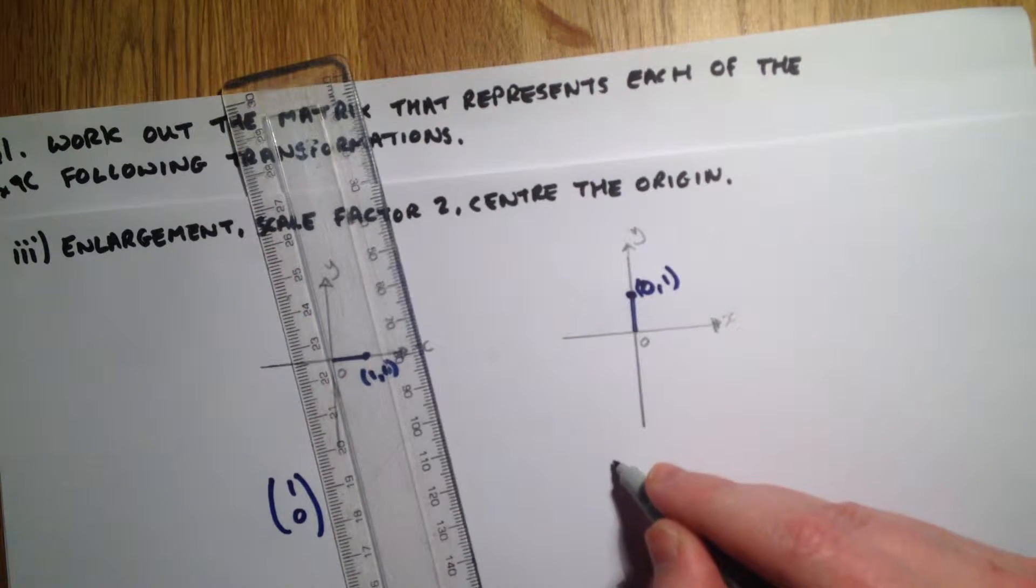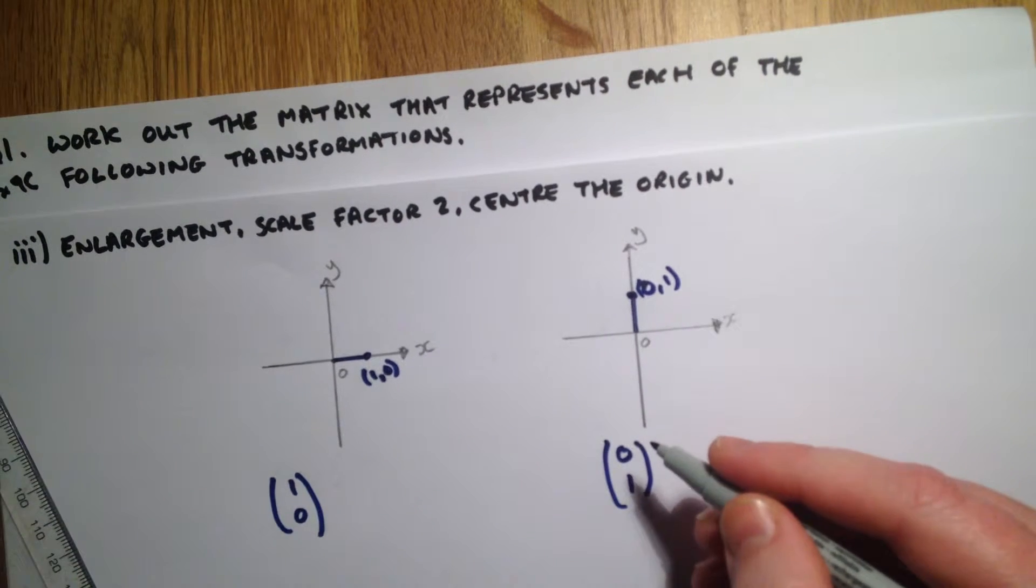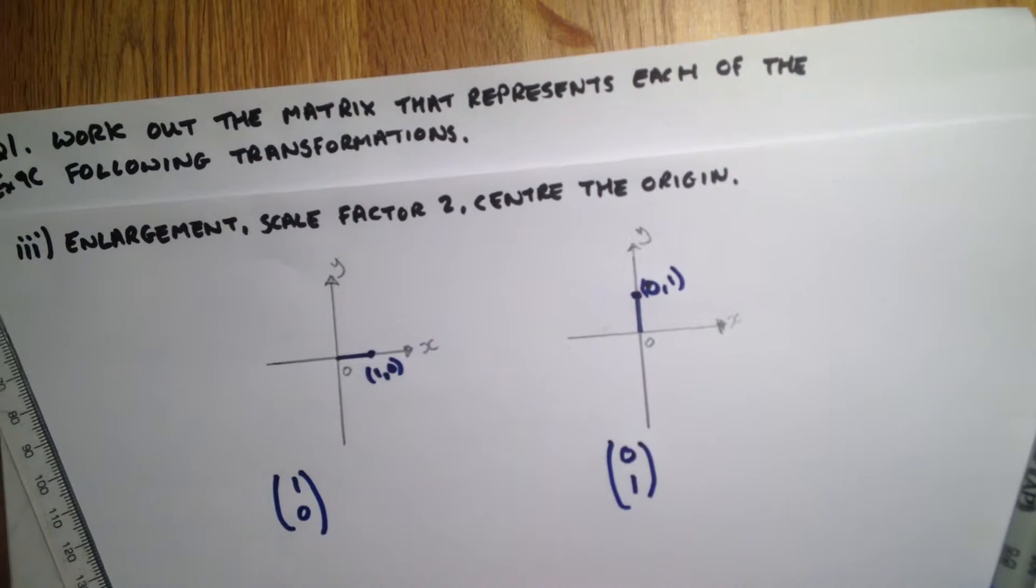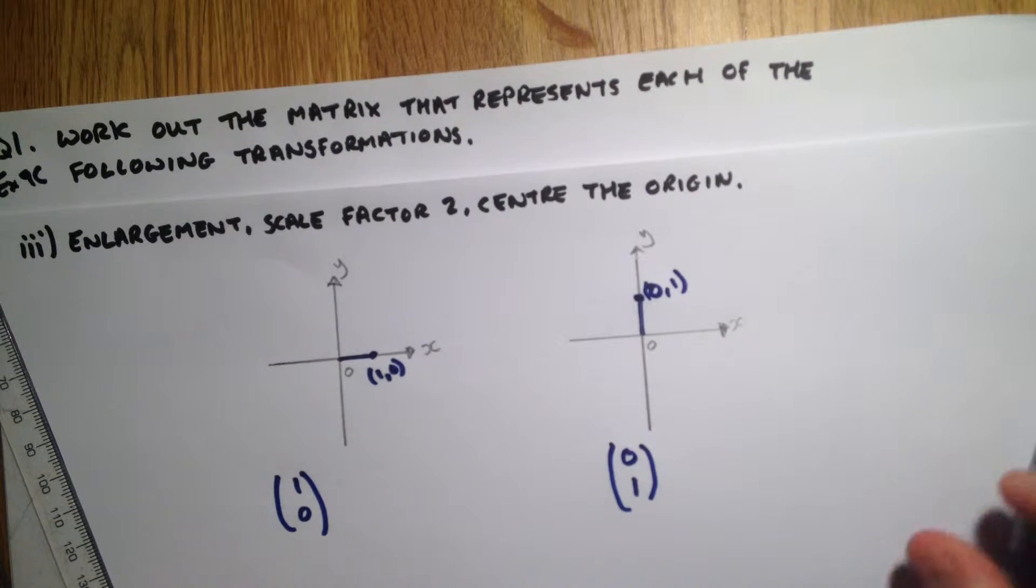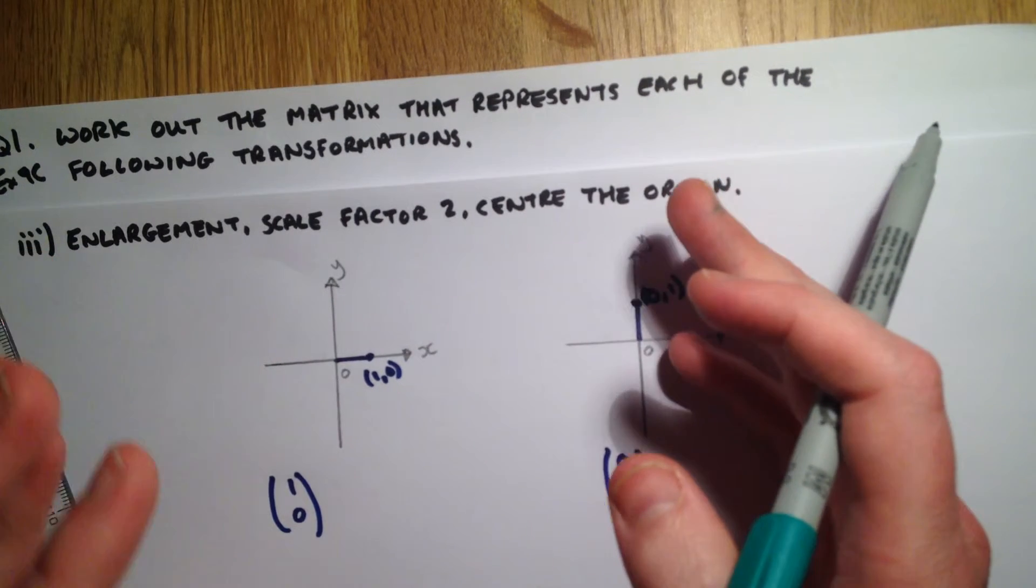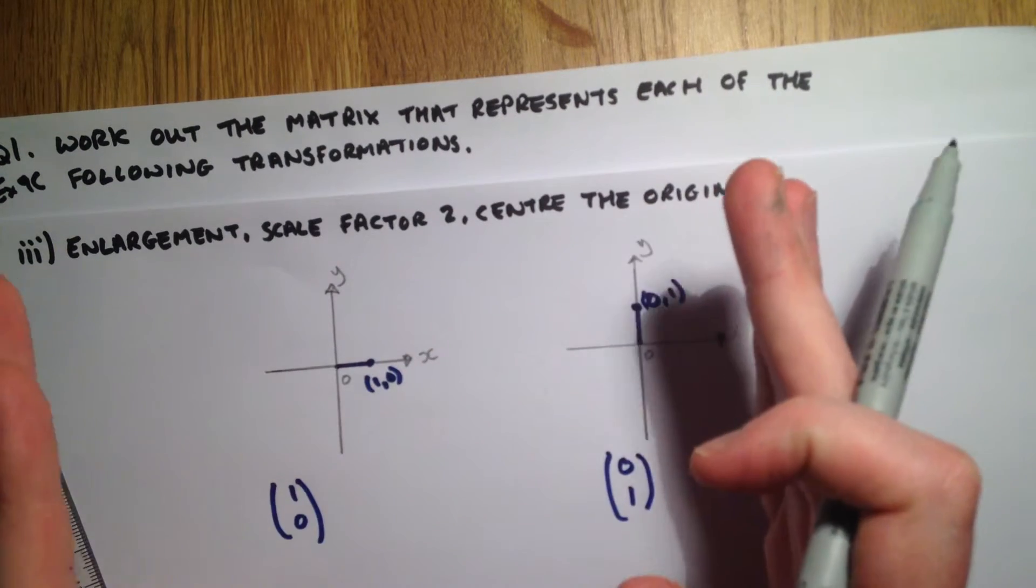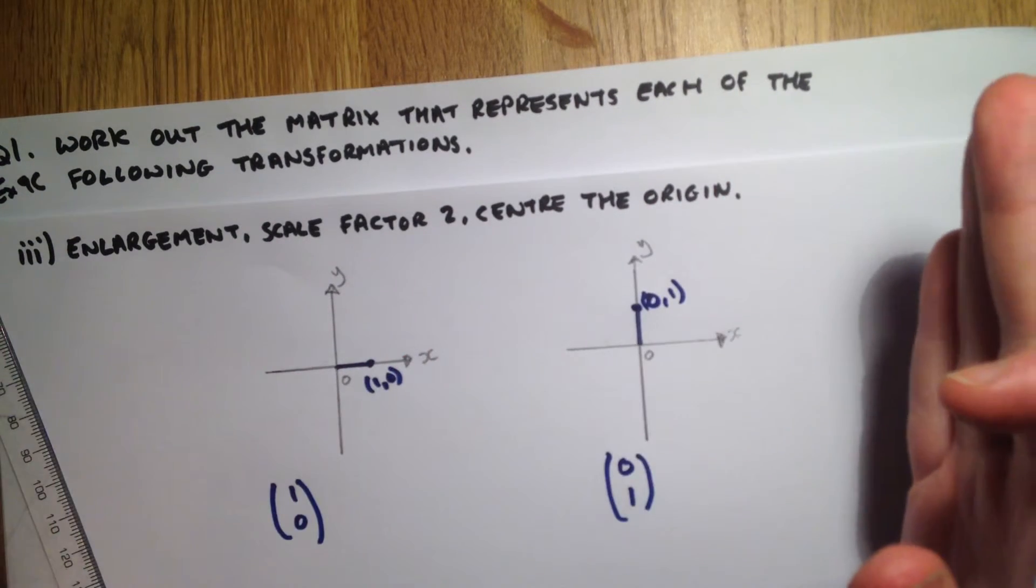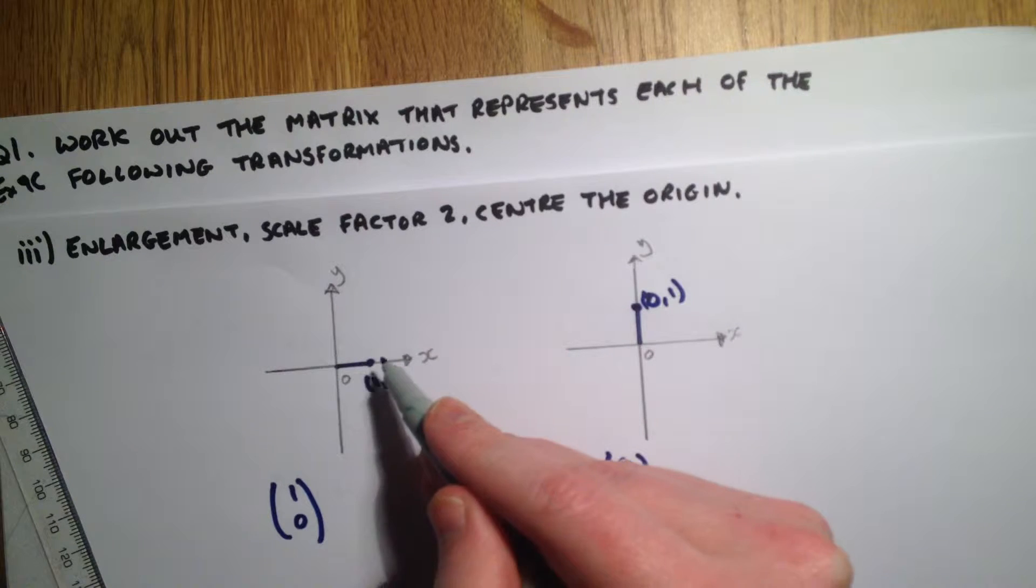It says enlargement, scale factor 2, center the origin. So with an enlargement, you've got to think everything is going to get twice as far away, everything is going to expand twice as big. So this point here doesn't move, it's still in the same place, but everything else expands.